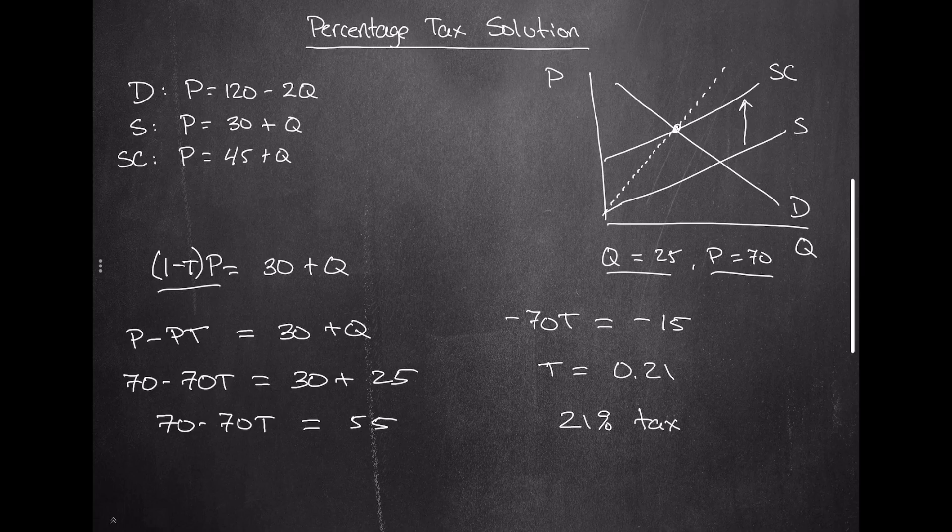Which means we need a 21% tax. We can solve it this way as well. This will get you the exact same answer in terms of society as the $15 per unit tax. It's just this way, we're doing it as a percentage tax in much the same way that you do your sales taxes at the grocery store or gas station.